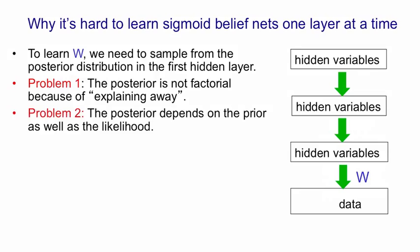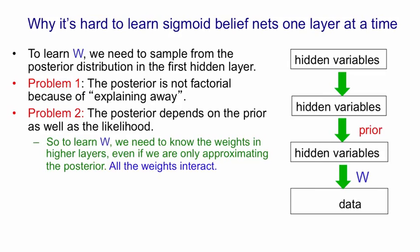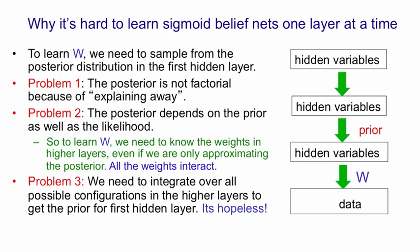Because we have higher layers of hidden variables, they're not even independent in the prior. Those hidden variables in the layers above create a prior, and that prior will itself cause correlations between the hidden variables in the first layer. To learn W, we need to know the posterior in the first hidden layer, or at least an approximation to it. And even if we're only approximating it, we need to know all of the weights in higher layers in order to compute that prior term. In fact, it's even worse than that, because to compute that prior term we need to integrate out all the hidden variables in higher layers — that is, consider all possible patterns of activity in those higher layers and combine them to compute the prior. Computing that prior is a very complicated thing, so these problems suggest it will be extremely difficult to learn those weights W.